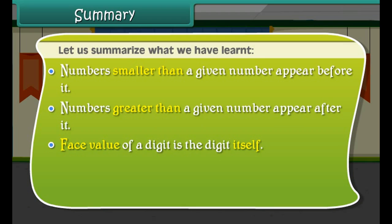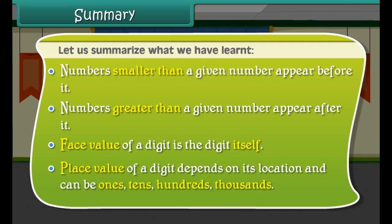The face value of a digit is the digit itself. The place value of a digit depends on its location and can be ones, tens, hundreds, or thousands.